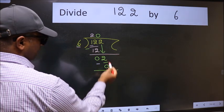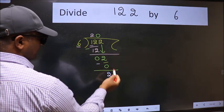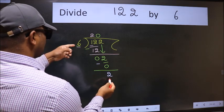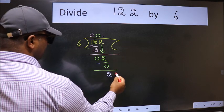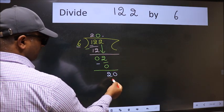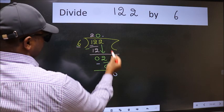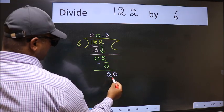We get 2. Over here, we did not bring any number down, and 2 is smaller than 6. So now we can put the decimal point and take 0, making it 20. A number close to 20 in the 6 table is 6 times 3, which is 18.